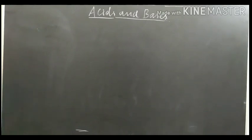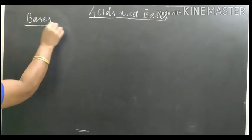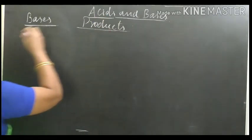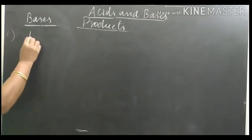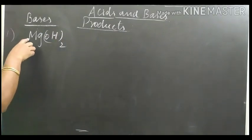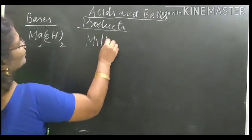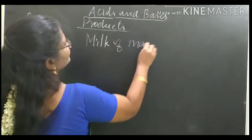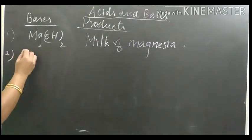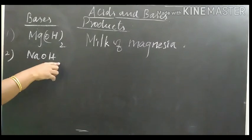Now we can see some of the common bases found in products. First one: Magnesium hydroxide. Magnesium hydroxide is an important ingredient of milk of magnesia. Second one: Sodium hydroxide. Sodium hydroxide is an important ingredient of detergents.